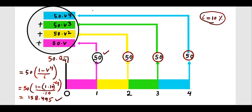So this one payment of 158.495 is equivalent to these four payments of 50 each. Suppose someone says I want to give you 158.495 for some task — later he says no, I want to make four payments of 50 at the end of each year for four years. Then that's fine — they are equivalent, they are the same.